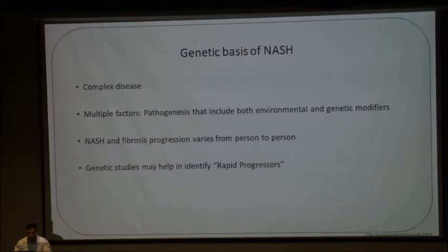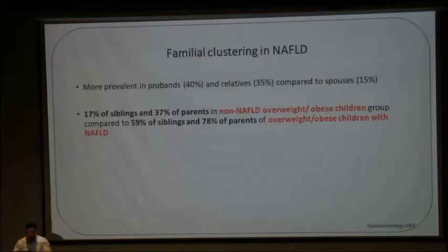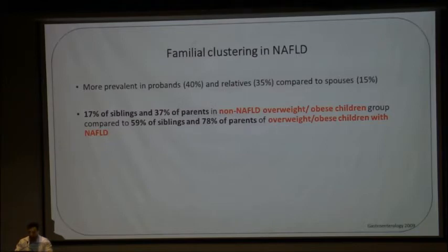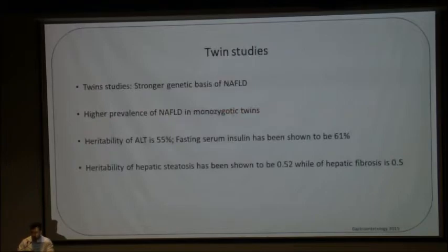The severity of NASH and the progression of fibrosis varies from person to person, and genetic studies may help in identification of rapid progressors. There is a familial clustering noted in NAFLD. It is more prevalent in probands and relatives as compared to spouses. 59% of siblings and 78% of parents of overweight and obese children with NAFLD have underlying fatty liver.